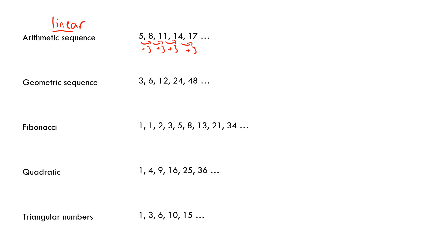With a geometric sequence, we multiply or divide by the same amount each time to get from term to term. Here, each term has been doubled. If I double again, I get 96. It's really useful to know the difference between an arithmetic sequence and a geometric sequence.